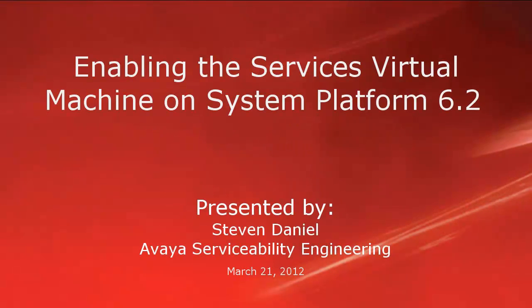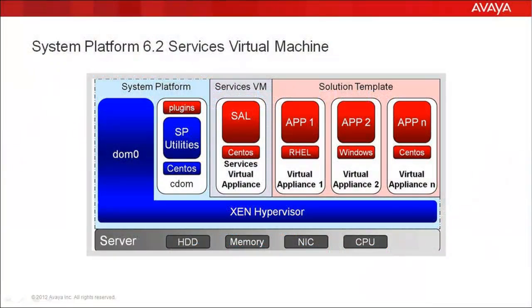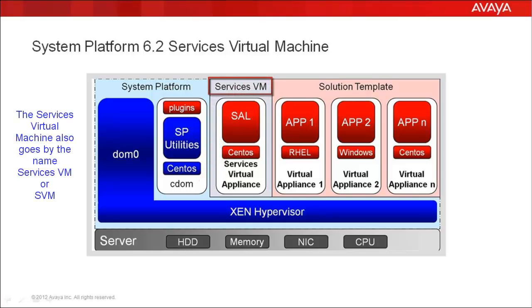Hello, my name is Steven Daniel with the Avaya Serviceability Engineering team. This video is about how you can enable the Services Virtual Machine on System Platform 6.2. Beginning with System Platform 6.2, the Secure Access Link Gateway is no longer co-resident with the CDOM Virtual Machine, but rather has been moved to a new and separate Virtual Machine. This new guest is referred to as the Services Virtual Machine, or SVM for short.